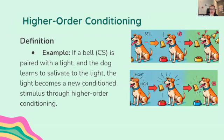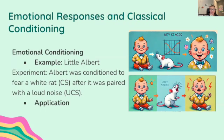Now let's go into higher order conditioning. This is when a conditioned stimulus is used as an unconditioned stimulus to condition a new stimulus. For example, if the bell — the conditioned stimulus — is paired with a light, and the dog learns to salivate to the light, the light becomes a new conditioned stimulus through higher order conditioning. You also need to know emotional responses and classical conditioning. Emotional conditioning elicits an emotional response such as fear or pleasure. In the Little Albert experiment, Albert was conditioned to fear a white rat — the conditioned stimulus — after it was paired with a loud noise, the unconditioned stimulus. These findings are used in therapeutic settings, such as counter-conditioning to treat phobias.